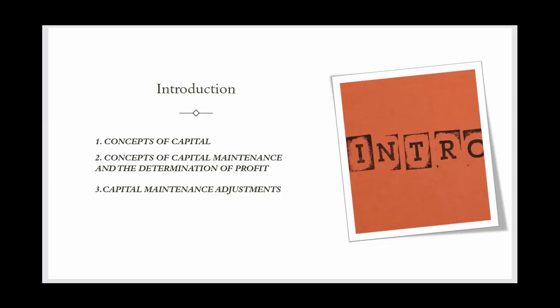Capital maintenance is crucial for determining profit accurately. It involves maintaining either the financial or physical capital of the entity over a period. Financial capital maintenance measures profit based on the increase in net assets, while physical capital maintenance measures profit based on the increase in productive capacity. This distinction helps in understanding whether profit is derived from maintaining the capital's purchasing power or its physical capacity. Capital maintenance adjustments arise from revaluations or restatements of assets and liabilities. While they affect equity, they are not included in the income statement under certain concepts of capital maintenance. Instead, these adjustments are reflected in equity as capital maintenance adjustments or revaluation reserves.